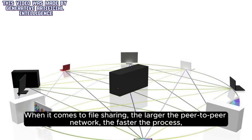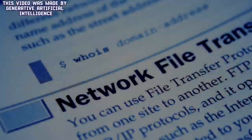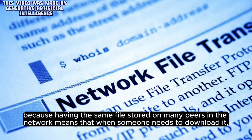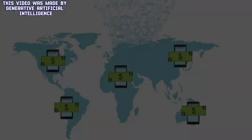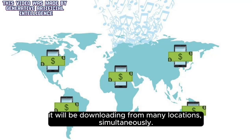When it comes to file sharing, the larger the peer-to-peer network, the faster the process. Because having the same file stored on many peers in the network means that when someone needs to download it, they will be downloading from many locations simultaneously.